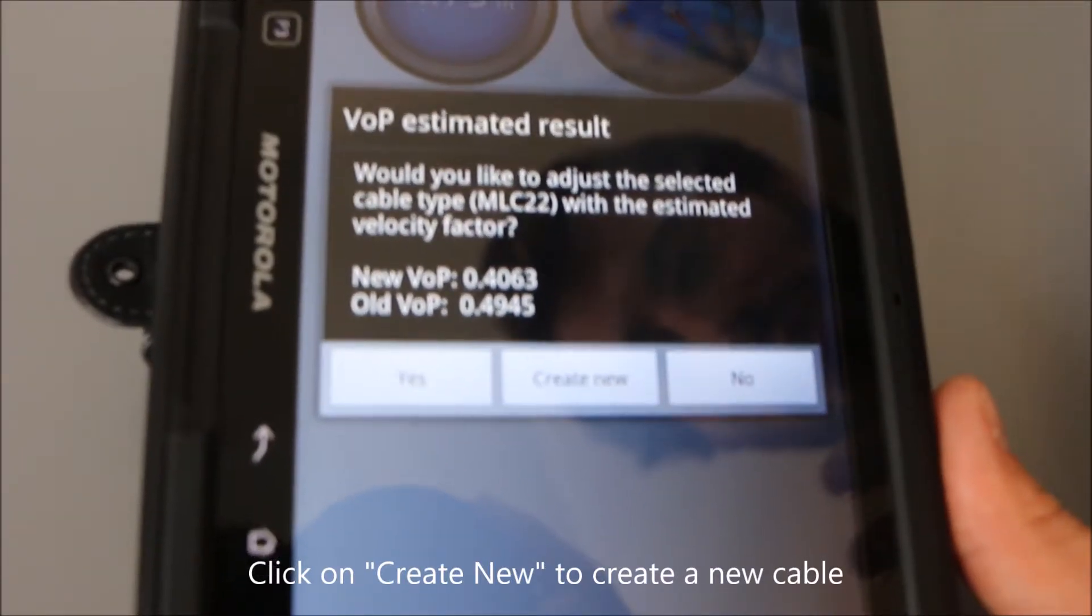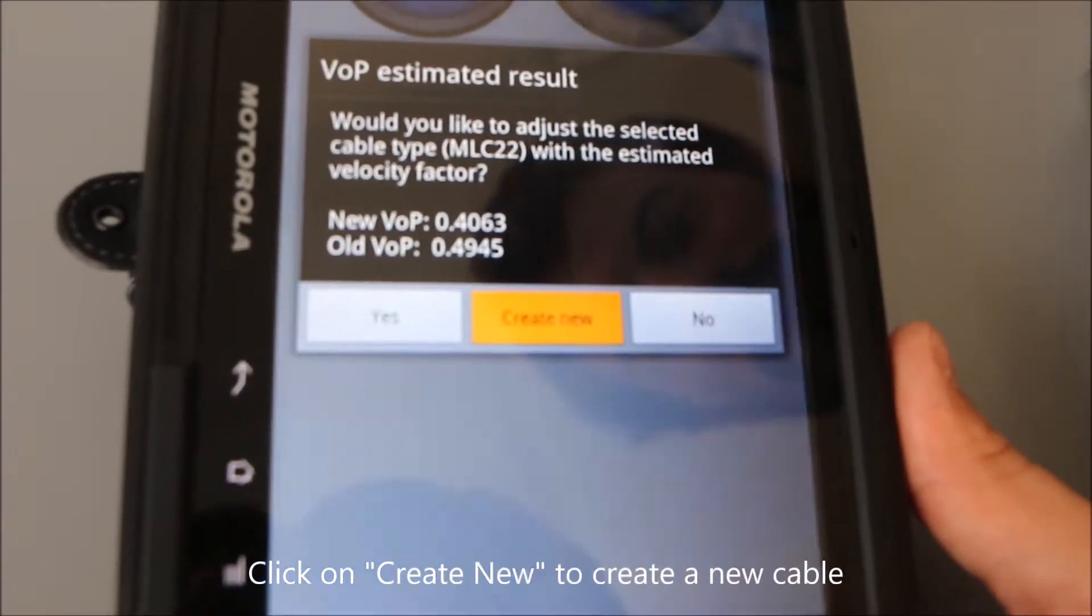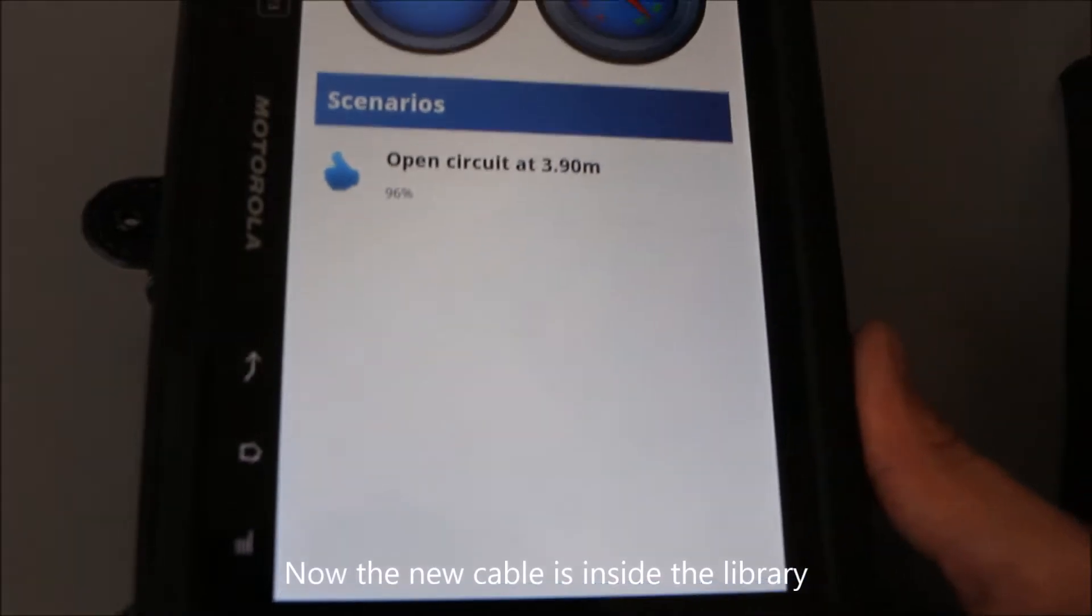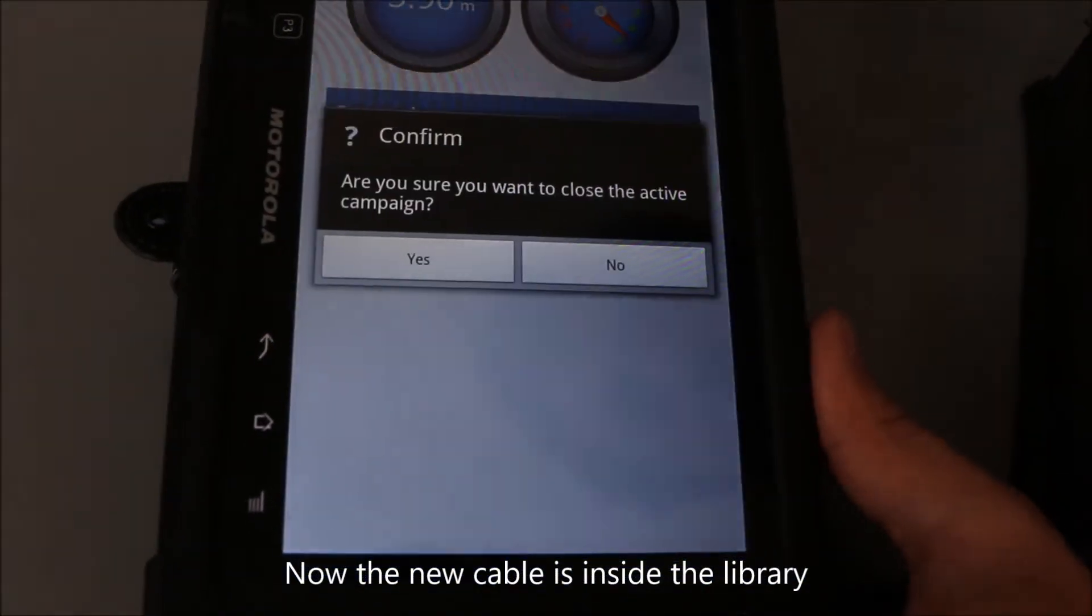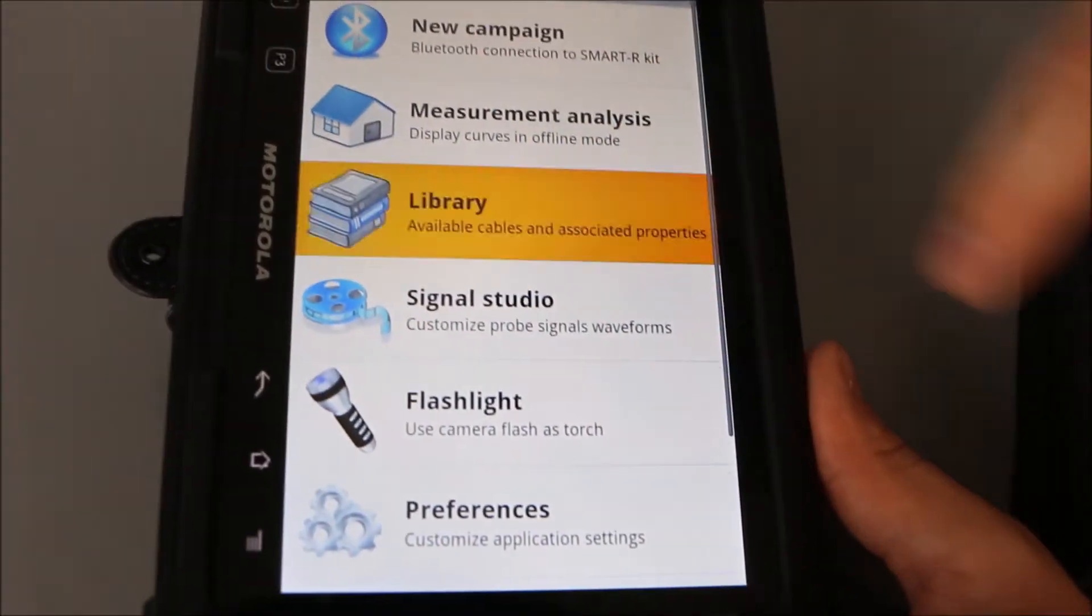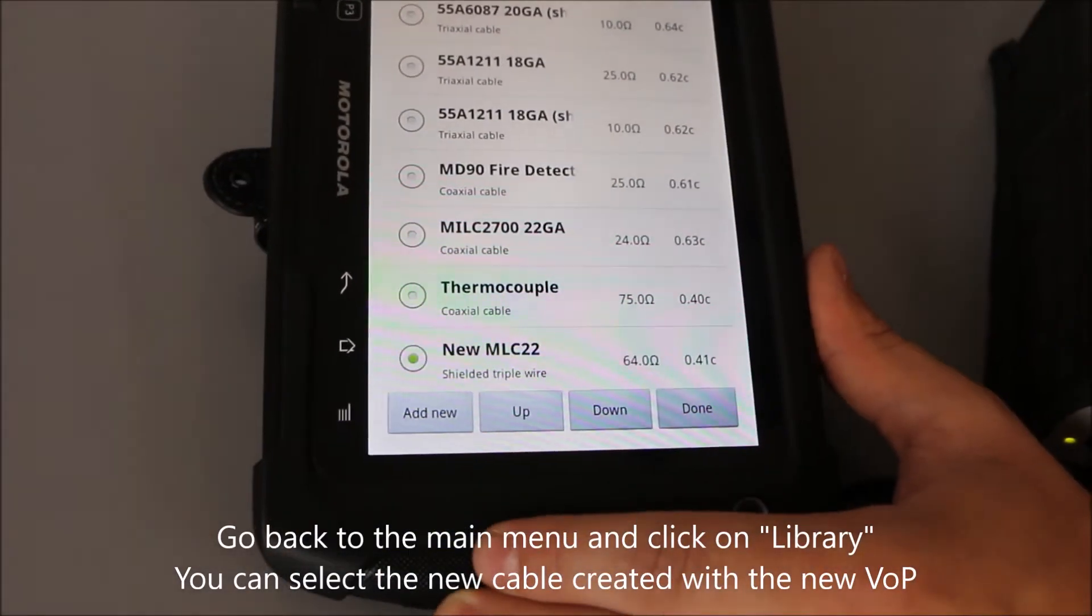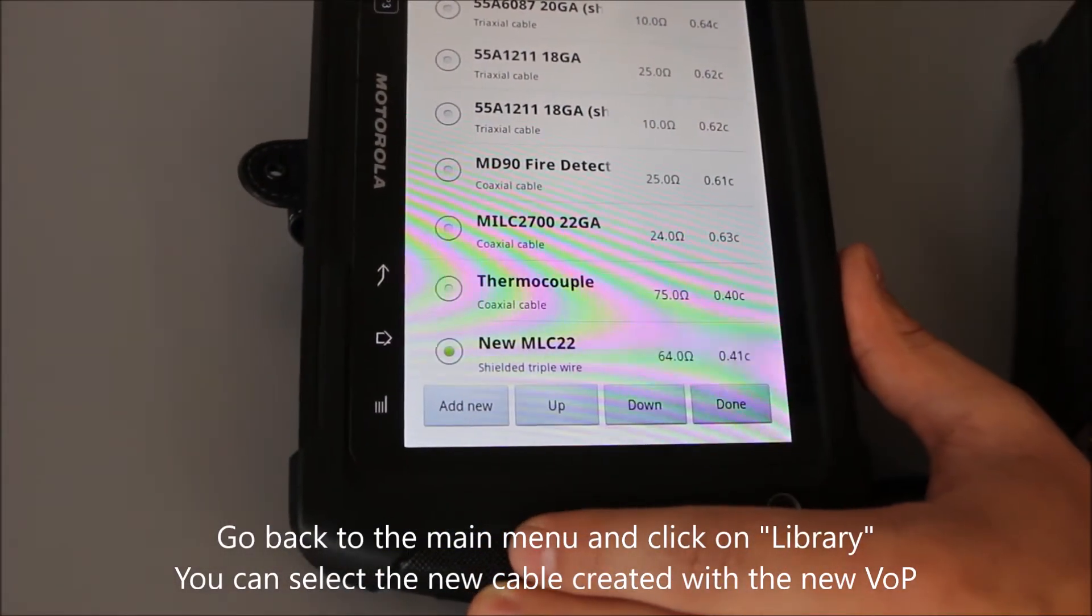Then you have to click on create new, create a new cable. And now this cable is inside the library, new cable with the new VOP.